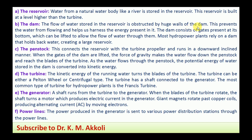The dam prevents the water from flowing freely and helps us harness the energy present in it. The dam consists of a gate at its bottom which can be lifted to allow the flow of water. These gates are provided to control the flow of water. Most hydropower plants rely on the dam and hold back water creating a large reservoir — most power plants that generate electricity from hydel sources depend upon the dam.